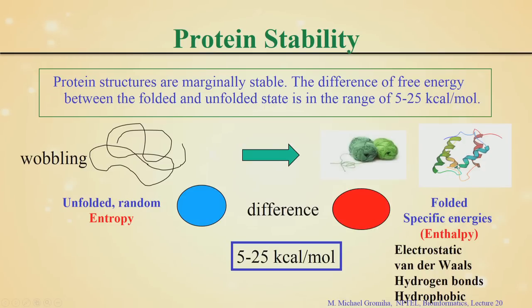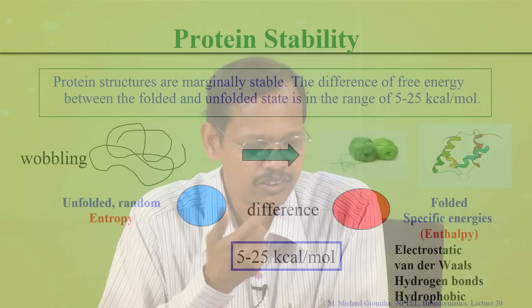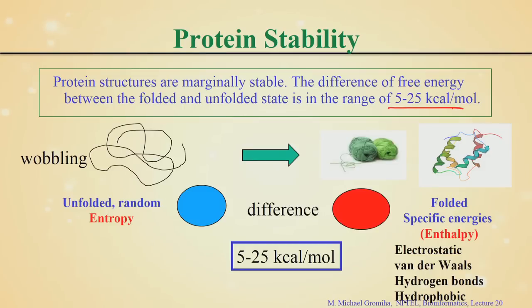Specifically, the interactions are: electrostatic interactions, van der Waals interactions, hydrogen bonds, hydrophobic interactions, and disulfide bonds. Electrostatic and van der Waals are non-covalent interactions, and disulfide bonds are bonds between two sulfur atoms in cysteine. The contribution of all these interactions is very high in both the folded and unfolded states. The difference between folded and unfolded state is very small — about 5 to 25 kcal per mole.